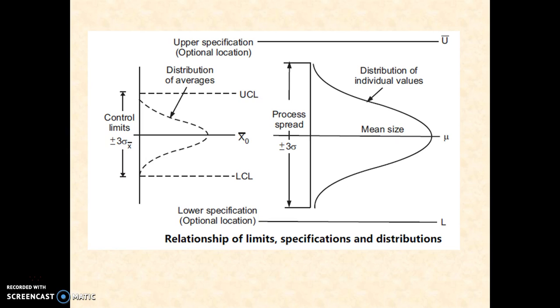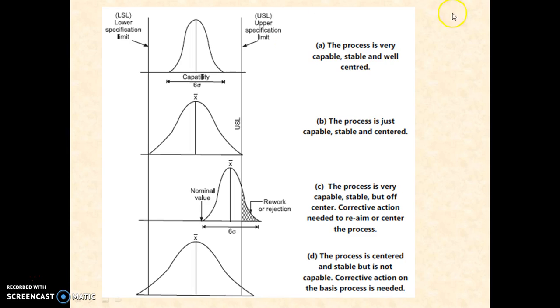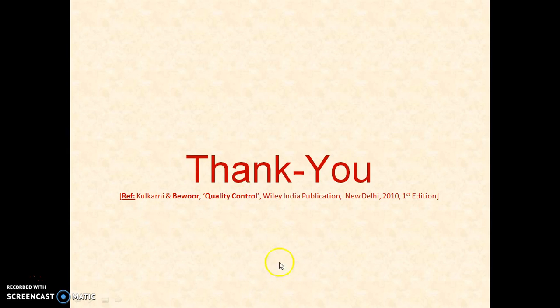We will understand more about process capability and how to quantify the chart values later. This is what I was talking about: the process is very capable. These are the two limits specified by the designer, and the manufacturing process is offering spread like this. The first situation is the process is very capable, stable, and well controlled. The second situation is the process is capable, stable, centered, but just capable - any deviation will make this process uncapable. The last one has a very big spread. These are comparative analyses.